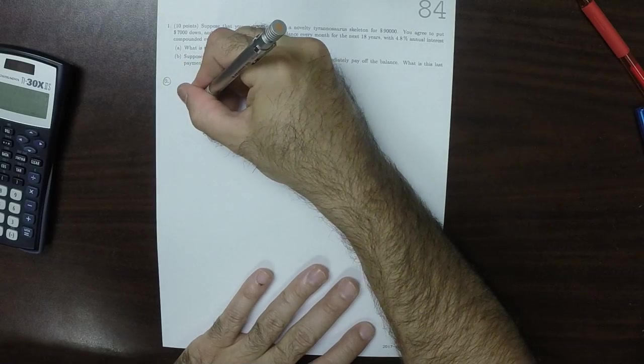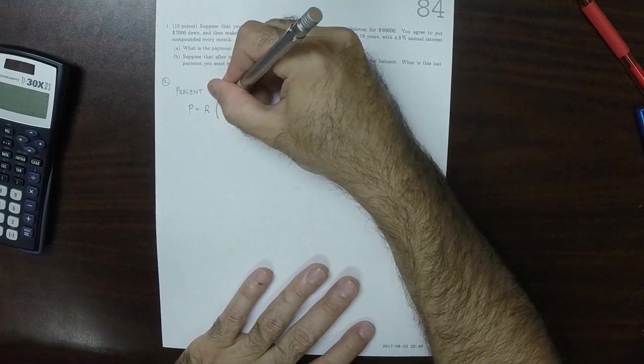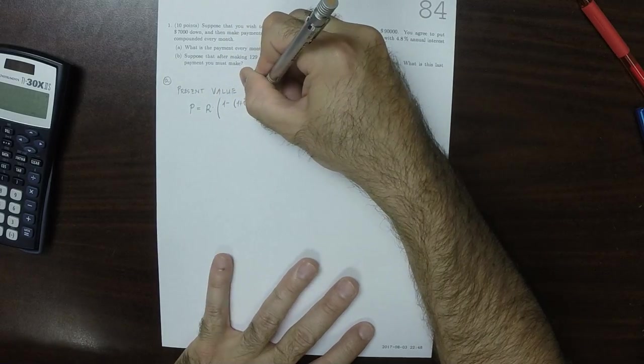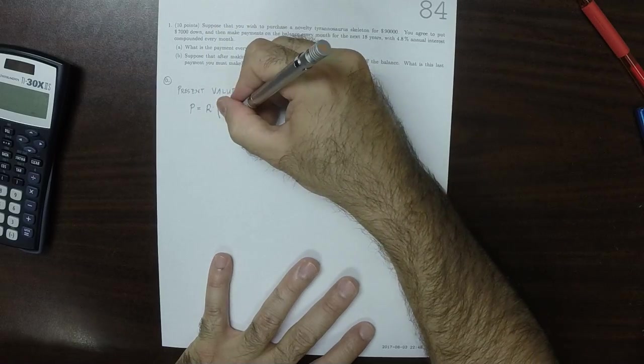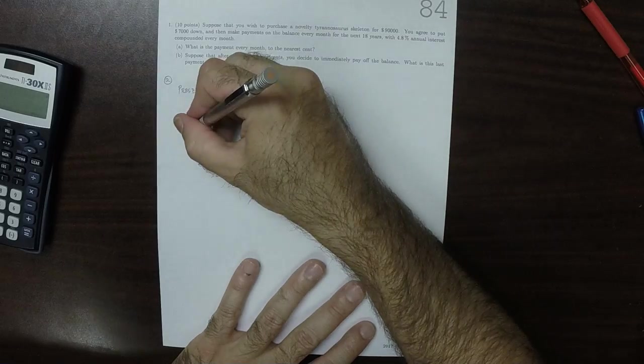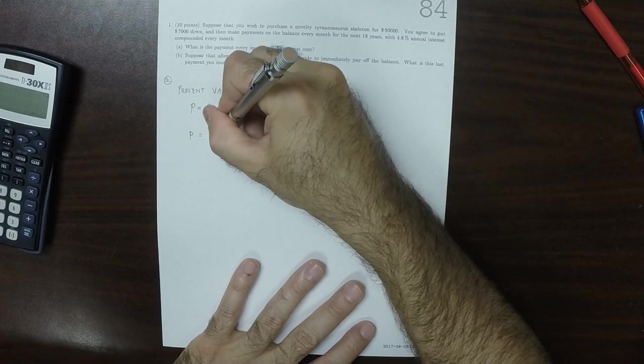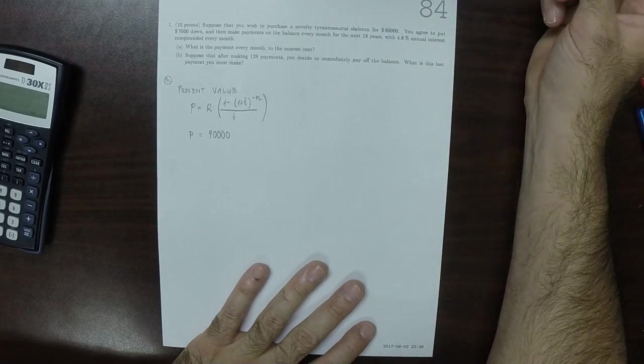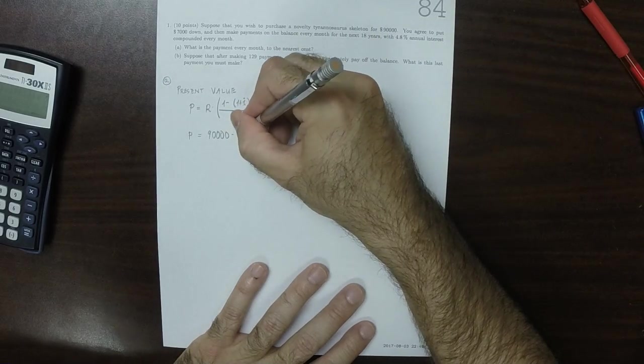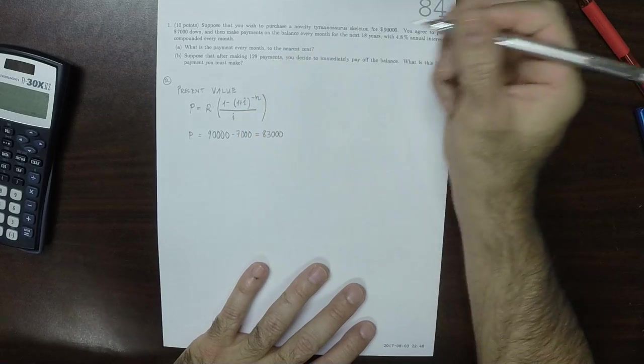And the present value formula is P equals R multiplied by 1 minus 1 plus I to exponent negative N, divided by I. And what we're saying is that the present value of what's being financed, of the outstanding balance, is 90,000 minus 7,000, because you put 7,000 down, so $83,000.